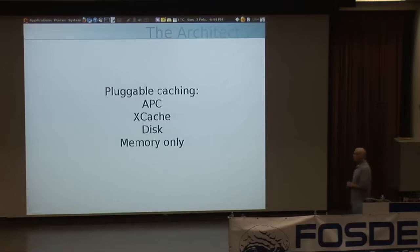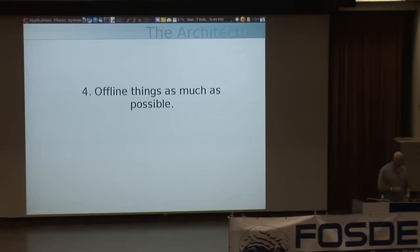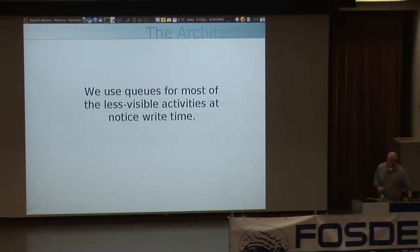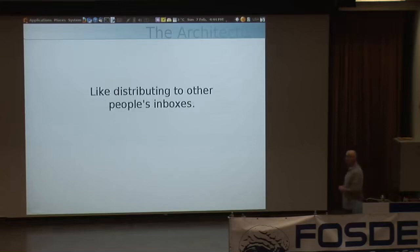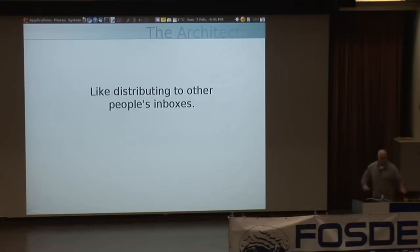We use pluggable caching systems — memcached by default, but you can also use APC or Xcache variable caching, cache to disk, or just cache in memory. Finally, one of the main things we do for scaling is push as much as we can to offline processing — these queue servers I was talking about. We use queues for most of the less visible activities at notice write time, like distributing notices to somebody else's inbox. You have a little bit of spare time — maybe 30 seconds to a minute — before anyone notices the delay, so we can do that work offline.